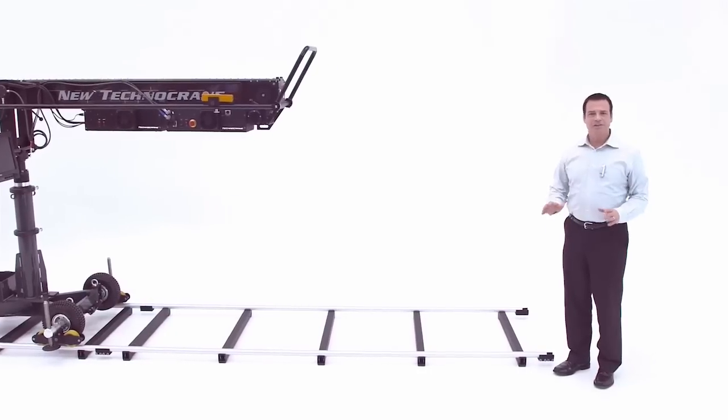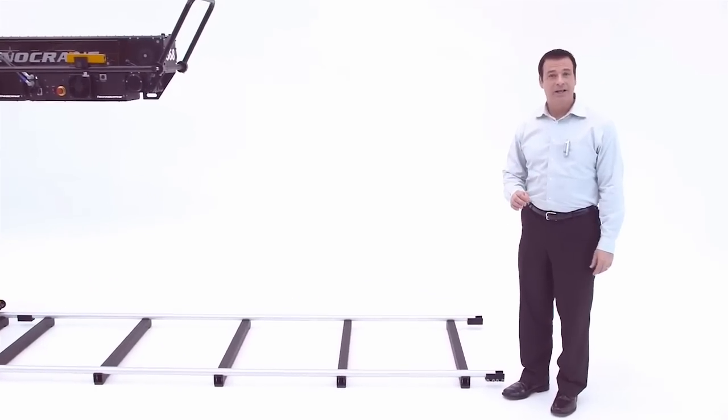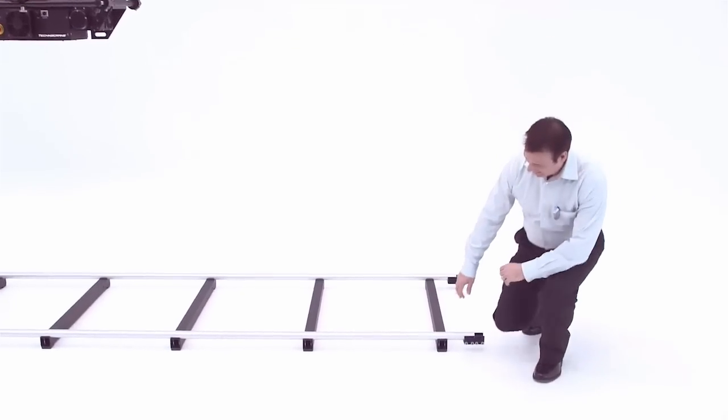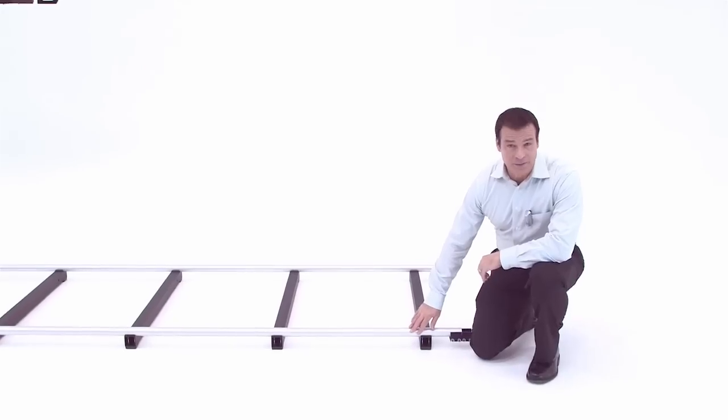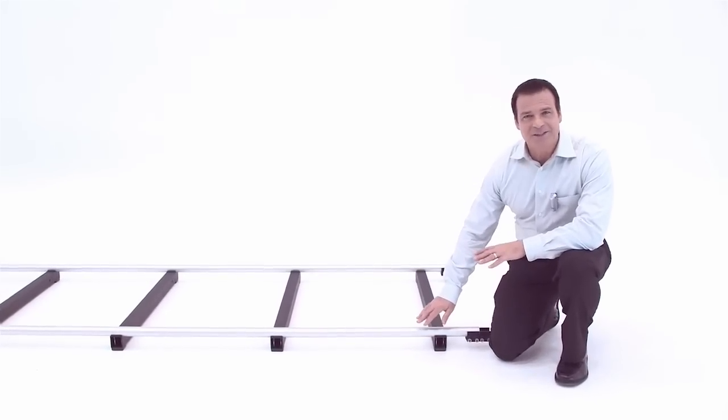The specially designed new Technocrane tracks are lightweight, yet rigid and stable. Each section is 3 meters long, or about 10 feet, and are easily joined together.